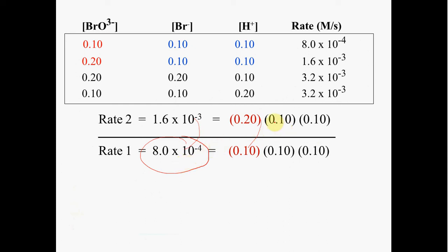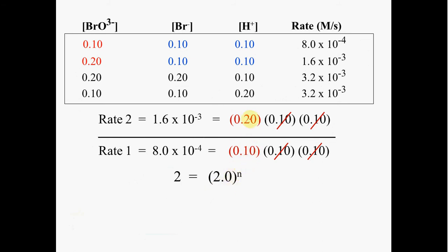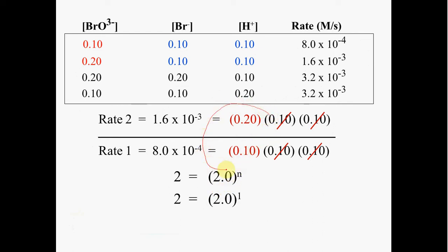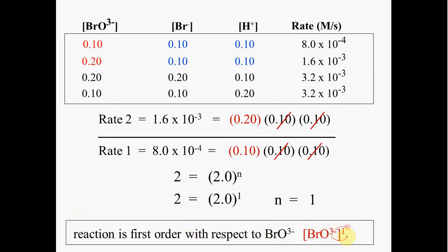The constant concentrations cancel out, and we look at the relationship between rate change and concentration change. Two divided by one gives us 2, so as we doubled the concentration we doubled the rate. The relationship between 2 and 2 is a first power — a first order relationship. The reaction is first order with respect to bromate: if you double the bromate ion concentration, the rate doubles.